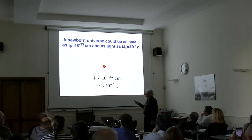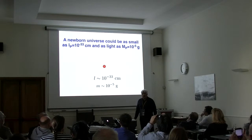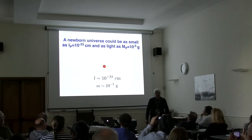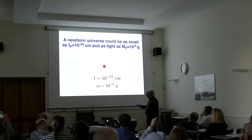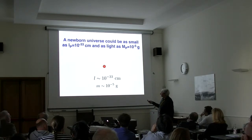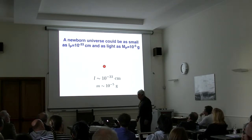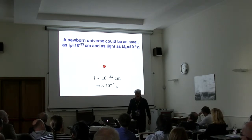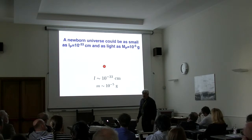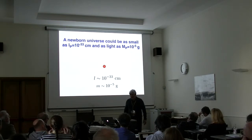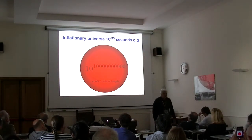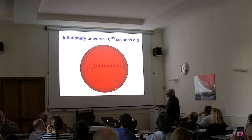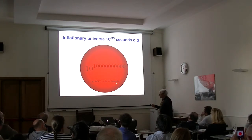We may start with the smallest possible object, since we cannot consider objects smaller than Planckian size or denser than Planckian density. Starting with the smallest object with the largest possible energy density and letting it expand: during approximately 10^-35 seconds, this small droplet grows to an enormous size — and it really does not matter what units you use.